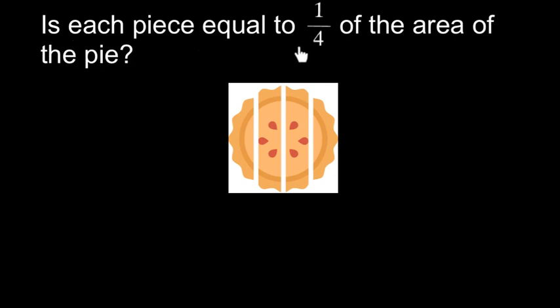Is each piece equal to one-fourth of the area of the pie? So we have a pie, and it has one, two, three, four pieces.